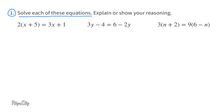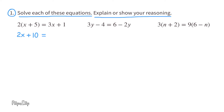Number 1. Solve each of these equations and explain or show your reasoning. Let's use the distributive property to multiply 2 times x, which is 2x, and 2 times positive 5, which is positive 10. So on the left side it reads 2x plus 10, and on the right side it reads 3x plus 1.